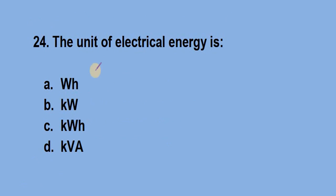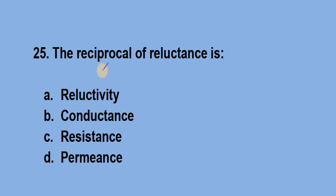Question number 24, the unit of electrical energy is? Answer is option C, kilowatt hour. Question number 25, the reciprocal of reluctance is? Answer is option B, permeance.